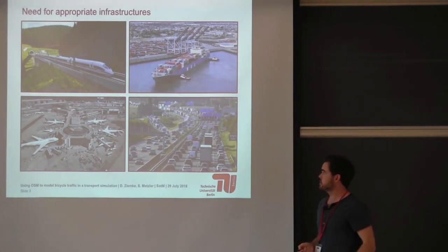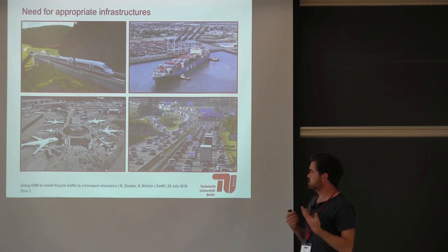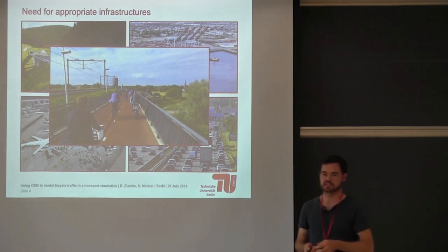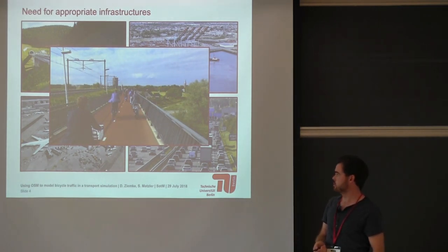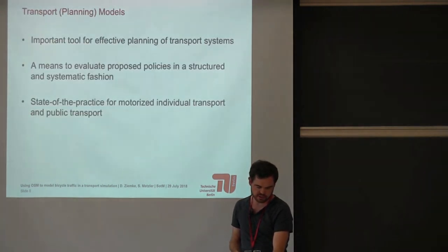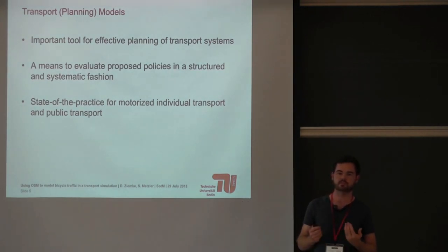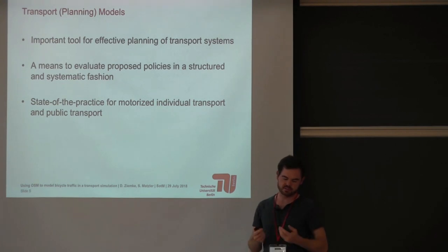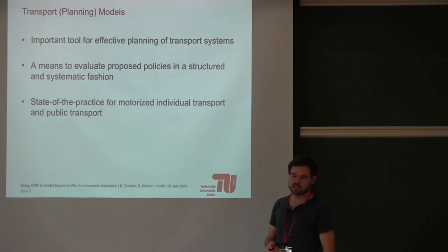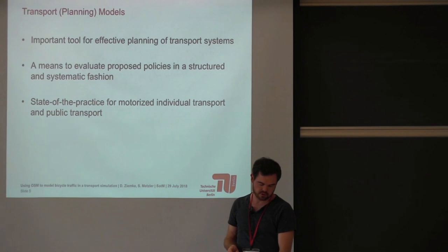Just like other modes of transport, the bicycle also needs specific infrastructure. We know the train needs a train track, and bicycling works much better and smoother if you have your dedicated infrastructure rather than having to squeeze in with other modes of transport. But we still need and want to evaluate this, and a suitable tool for evaluating transport policies and schemes is transport planning models. These are state-of-the-art for motorized individual transport and public transport, but not so much for the mode of cycling.